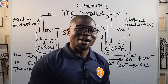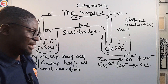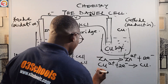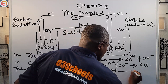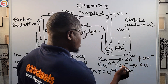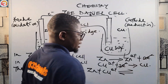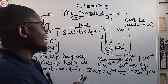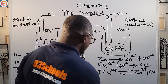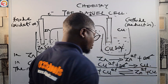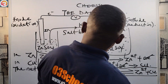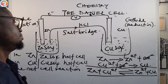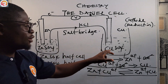The net cell reaction is: Zn + Cu²⁺ → Zn²⁺ + Cu. This is the typical reaction that occurs in the Daniel cell — commit it to memory. The anode is where oxidation takes place and the cathode is where reduction takes place.